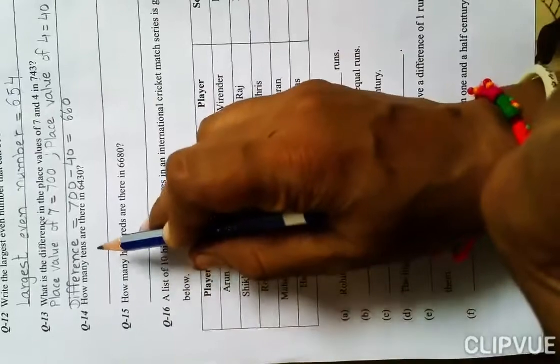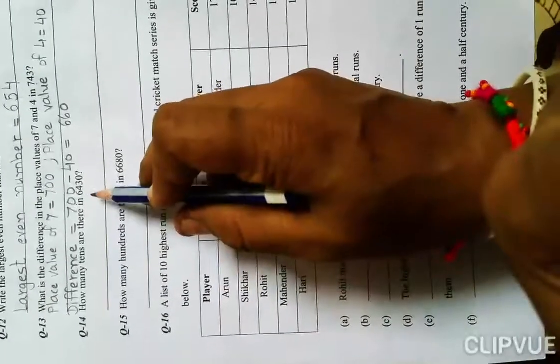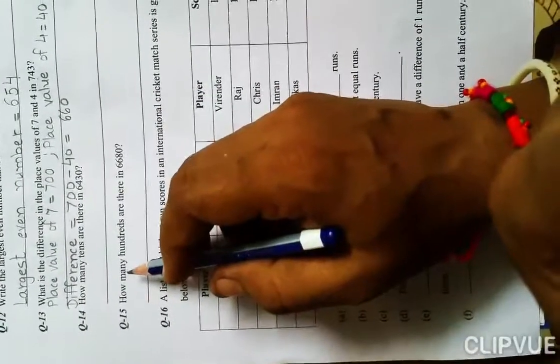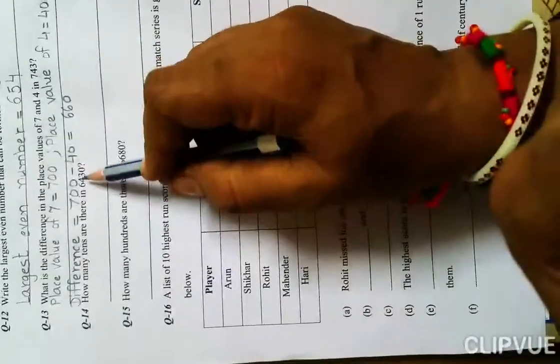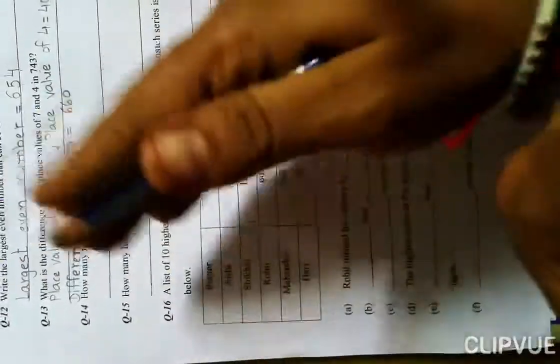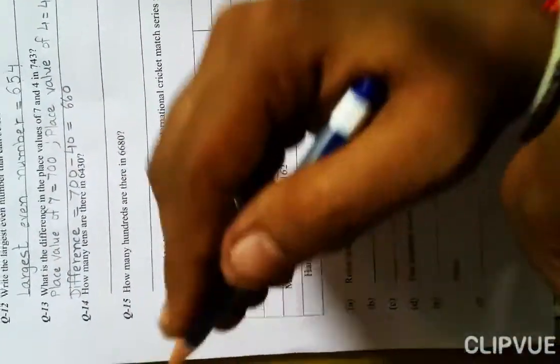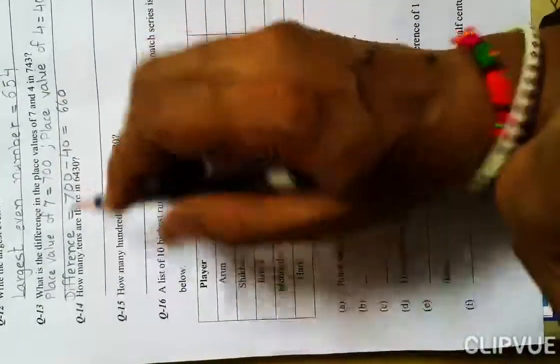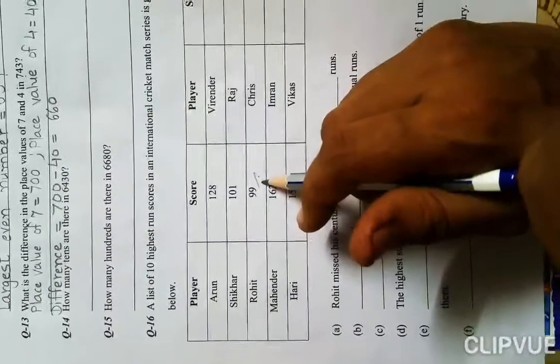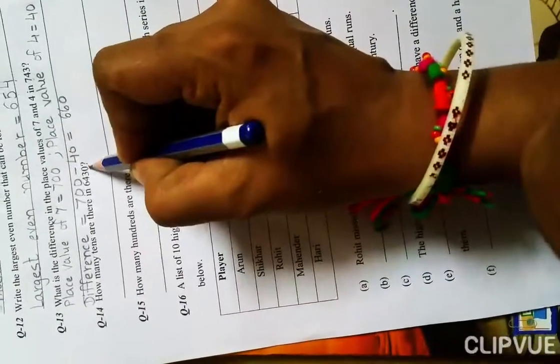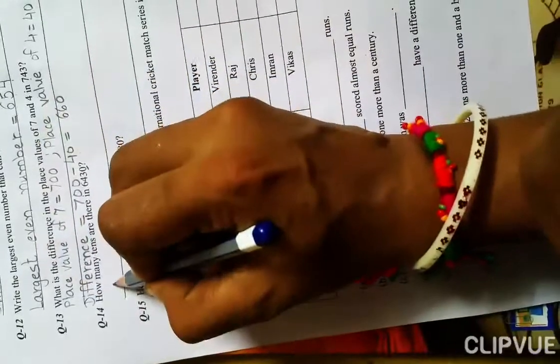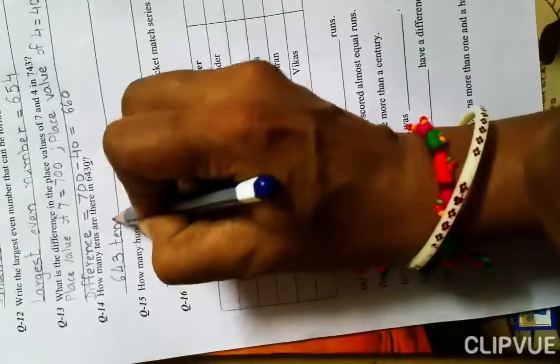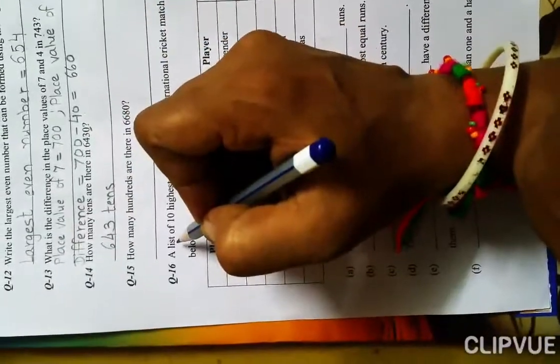How many tens are there in 6430? How many zeros are in tens? One zero. That one zero is given here. What do we do? We consider the zero for 10. Our answer will be 643 tens. The zero represents tens.